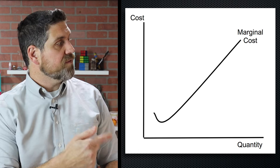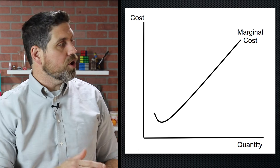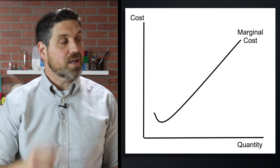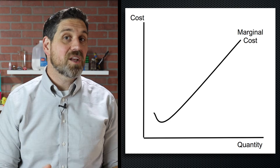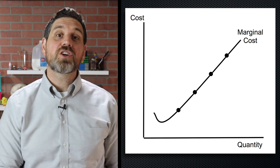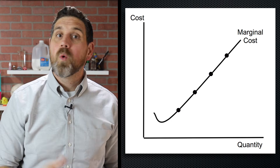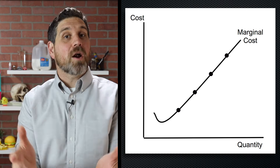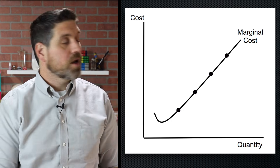Let me explain it all using a graph. Here's the marginal cost curve — notice it goes down and up because of the law of diminishing marginal returns. As you produce more pizza, the additional cost of producing each additional unit will be greater than the previous unit, so the marginal cost goes up. Let's assume you can sell every single pizza for $10, so the price is $10, and that's the same as the marginal revenue. If the price is $10, the additional revenue you get from each pizza is $10.